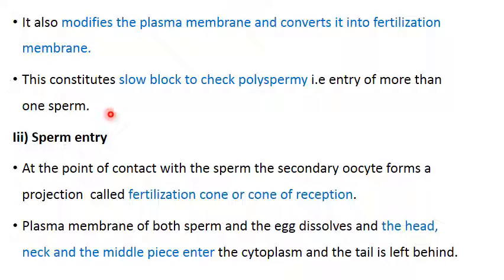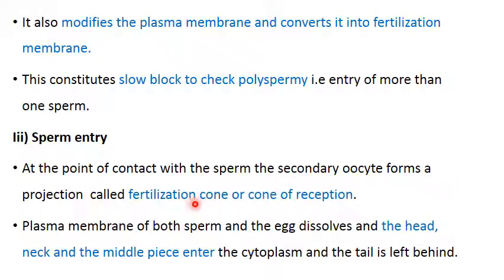Both depolarization and the cortical reaction together ensure entry of only one sperm. Next is sperm entry. As soon as the sperm reaches the surface of the secondary oocyte, the cytoplasm at the region where the sperm touches the secondary oocyte bulges out to form a projection called the fertilization cone or cone of reception, to receive the sperm. Then the plasma membranes of both the sperm and the egg dissolve, and the head, neck, and middle piece enter the cytoplasm of the secondary oocyte, but the tail is left behind.